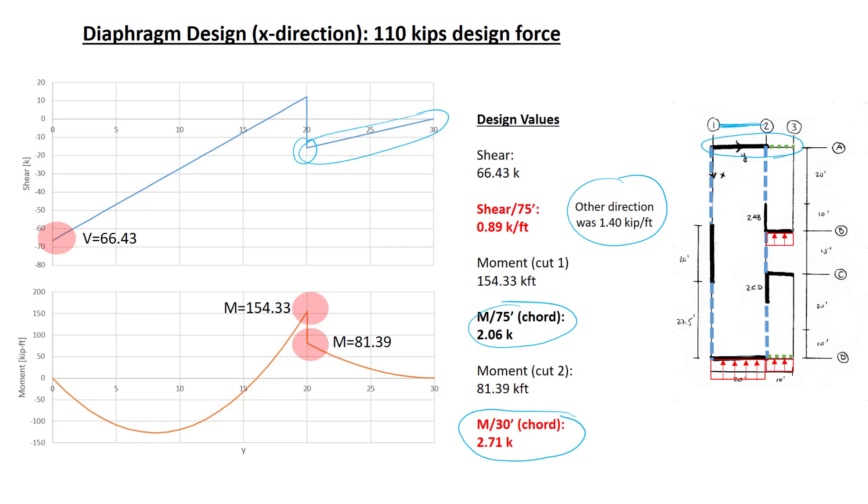We've obtained the design forces for the diaphragm, shear per unit depth, and chord forces. We would also need to look at collectors, but as stated previously, collector design was covered in flexible diaphragms. There's nothing different, and so we won't be repeating it here. This finishes the topic of analysis of structures with rigid diaphragms.